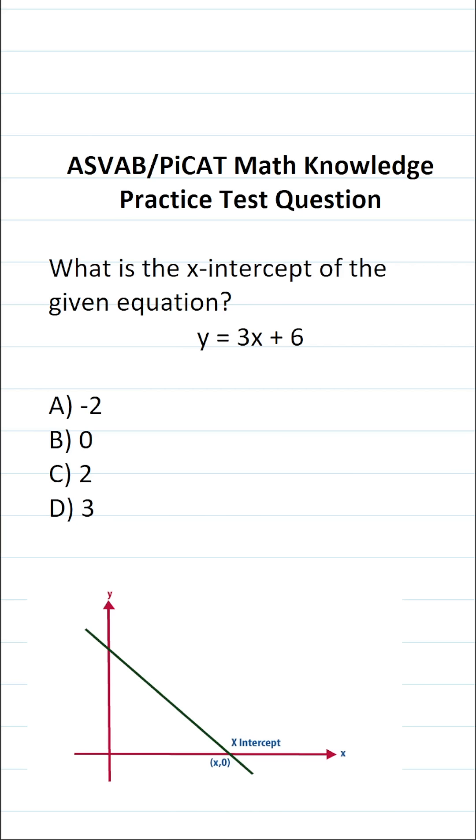So the first thing I want to point out is that the x-intercept is the point at which the line crosses the x-axis. And as it happens, that point looks like this. It's going to be some value x, but our y value is going to be 0.